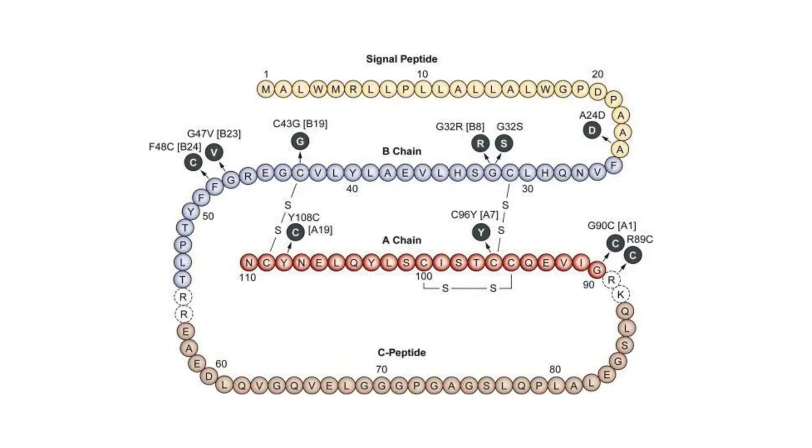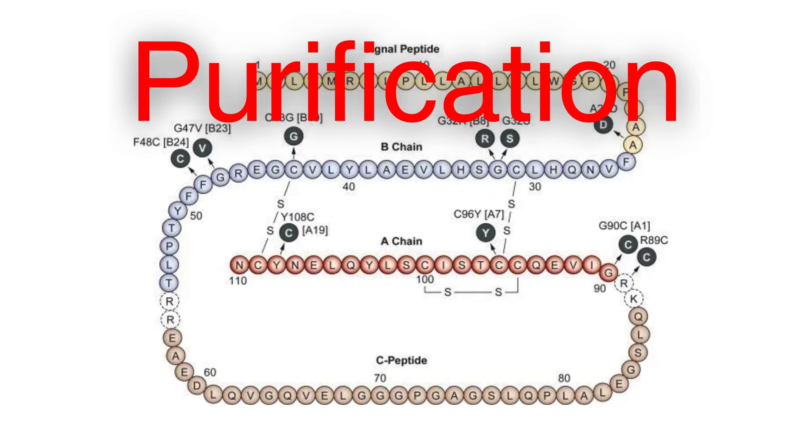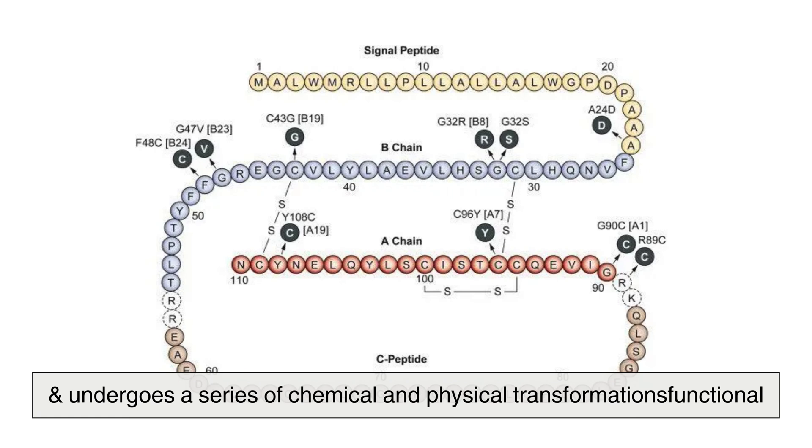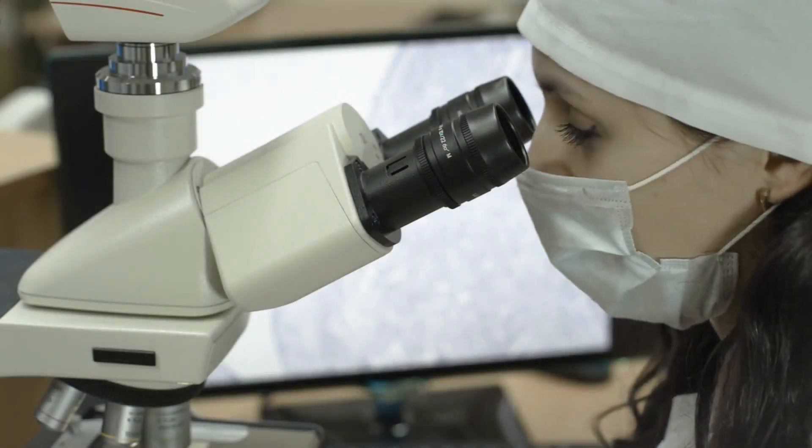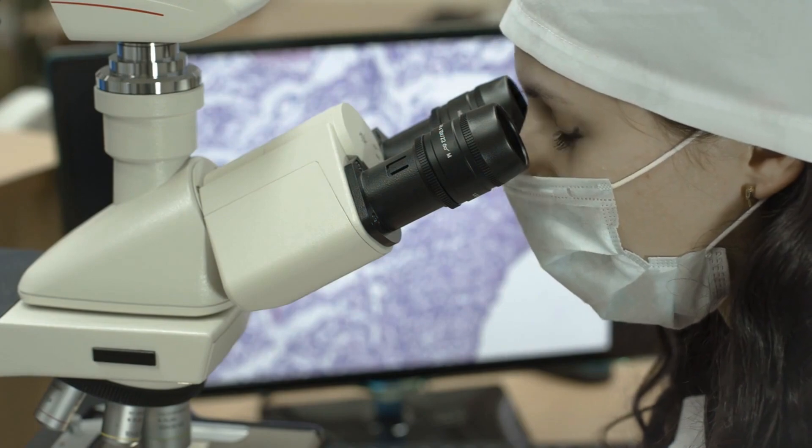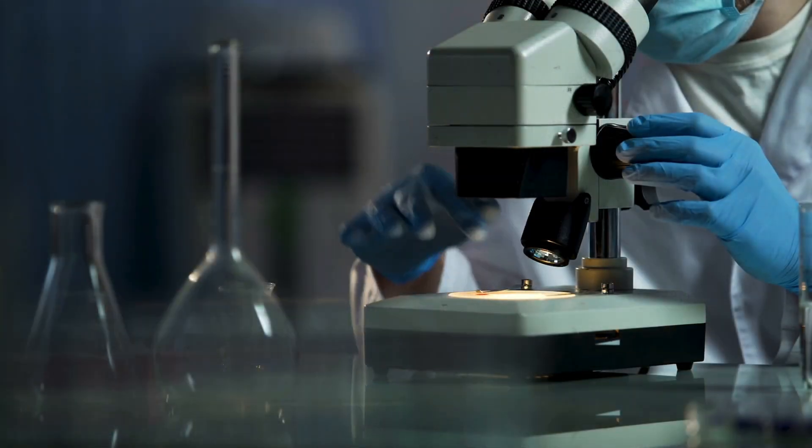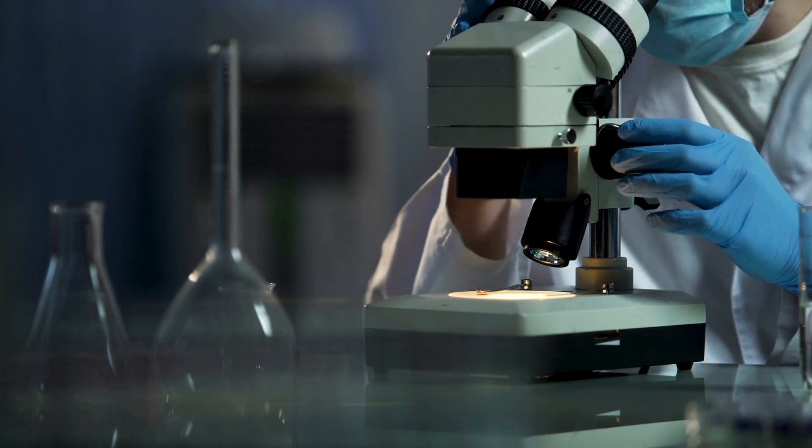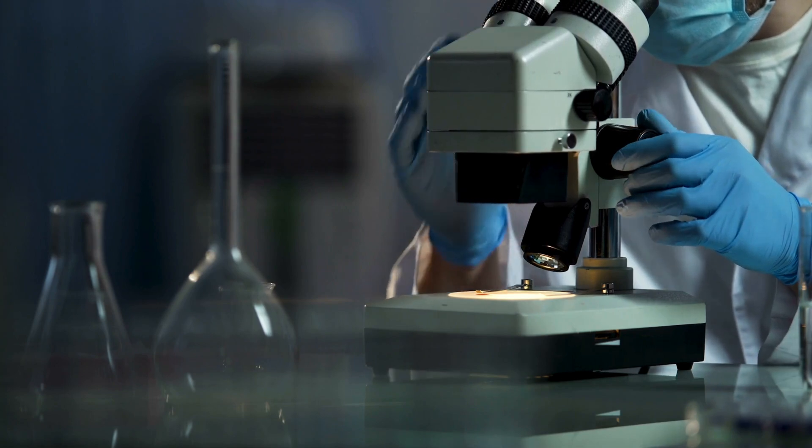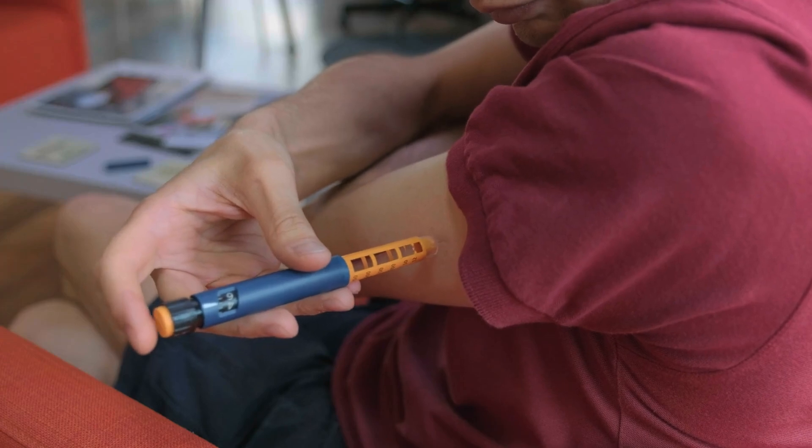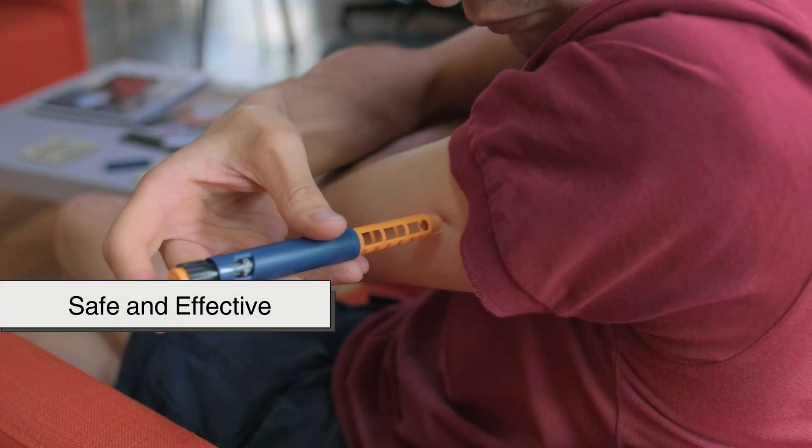After fermentation, the next step is purification. The insulin precursor must be extracted from the cells and undergo a series of chemical and physical transformations to become fully functional insulin. This involves breaking open the microbial cells and isolating the protein using advanced filtration techniques. Since insulin is initially produced as a single polypeptide chain, it must be carefully folded and clipped into the correct structure, mimicking the exact shape of the insulin naturally made in the human body. This intricate process ensures that the final product is both safe and effective.